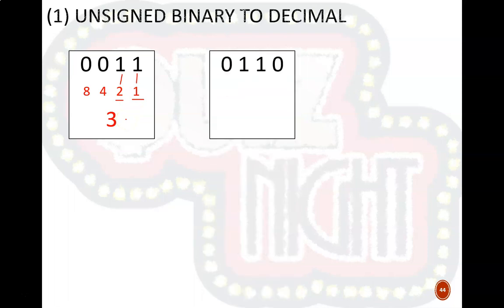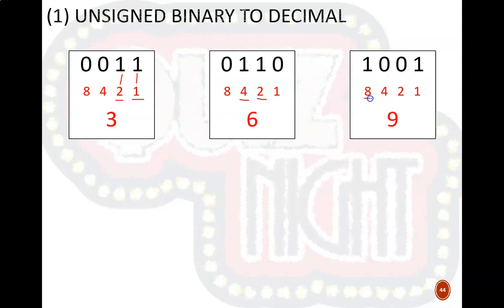Next one. The answer here is 6. In this case, the two weights that have a 1 associated with them are 4 and 2. Add those together, you get decimal 6. And that one is 9. Here the weights are 8 plus 1 being added together to give us decimal 9. Here the answer is 12. 8 plus 4 are the two weights.